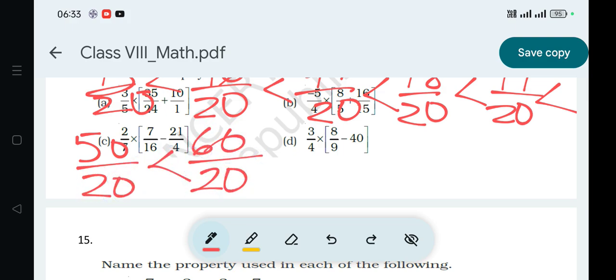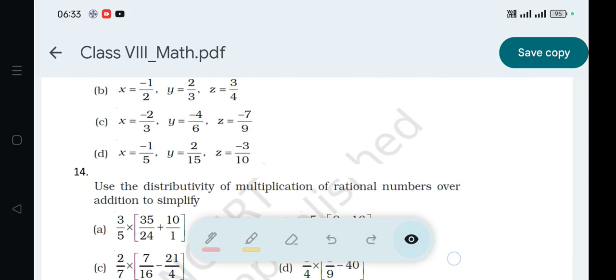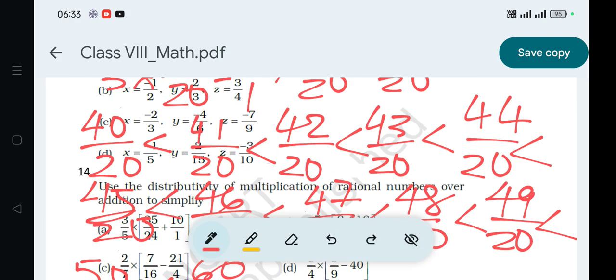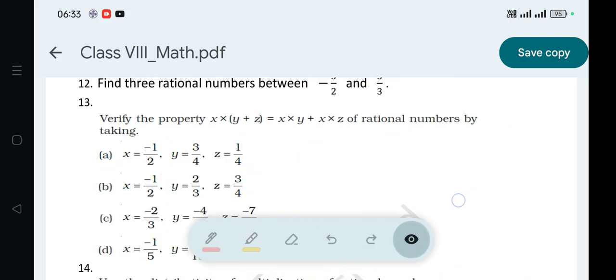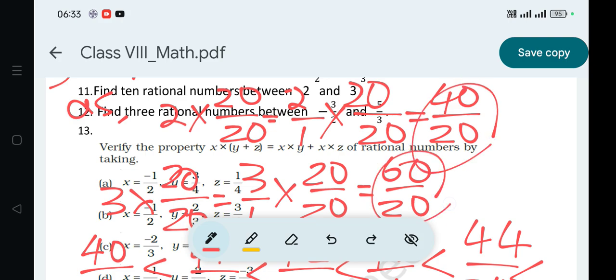Is less than 49 by 20, less than 50 by 20, is less than 60 by 20. The first is 40 by 20, which is equal to 2, and the last is 60 by 20, which equals 3. The middle values are the 10 rational numbers.